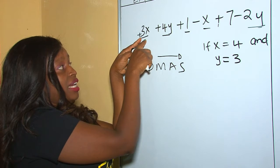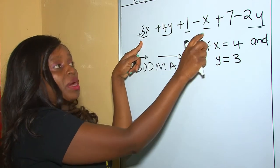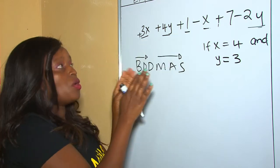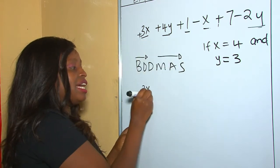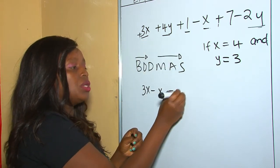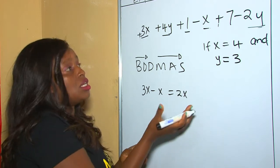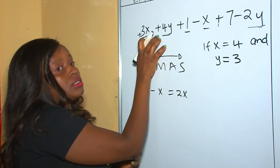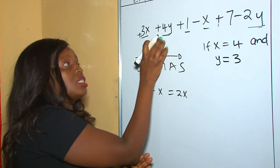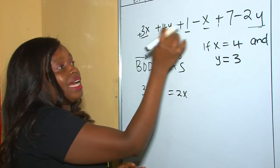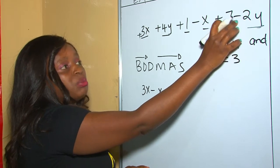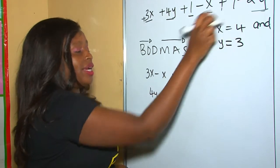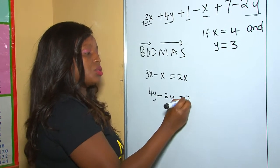Let's begin with x. Our 3x is positive. When you check in the question, the other x is being taken away. Therefore we shall say 3x take away x. Now we go to y. The operation behind 4y is addition, but the other y in the question is being taken away. Therefore we shall say 4y take away 2y, which is 2y.